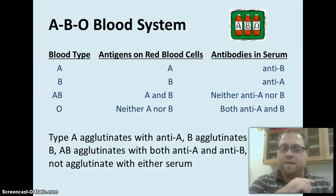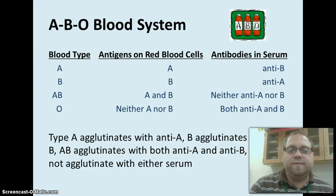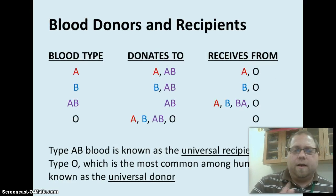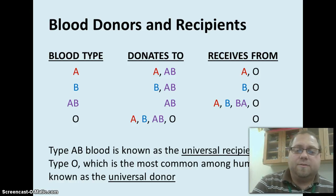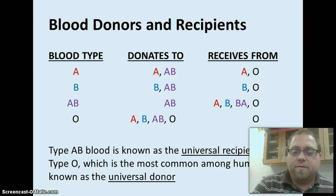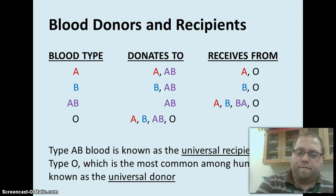AB blood has both of the antigens but it doesn't have either one of the antibodies, so it does not agglutinate. And then type O is different because it does not have A or B antigens in it. So when we talk about being able to donate: type A can donate to A or AB. With AB blood, it can donate to AB but it can receive from any of the other ones, because AB doesn't have the anti-A or anti-B antibodies. And O can donate to everyone, but it can only receive from O.